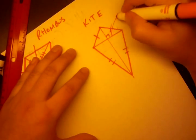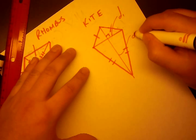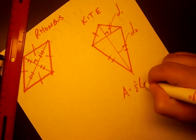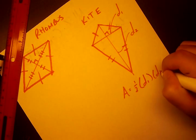And the cool thing is, if this diagonal has length d1, and this one has length d2, then the area of the kite equals one half times the product of the diagonals.